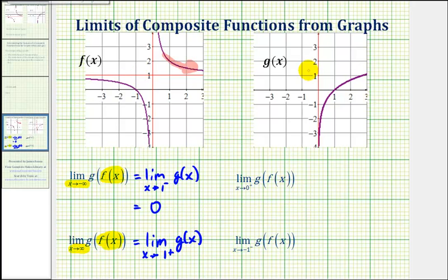Looking at the graph of g of x, as we approach positive one from the positive side or right side, we're approaching positive one from this direction, and notice how we're still approaching the function value of zero. Therefore, the limit of this composite function is also zero.